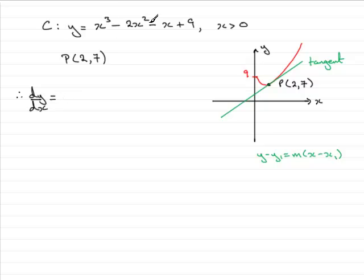So in the usual way, differentiating the first term, we would get 3x². For the next term, minus 4x. For the minus x, we would have minus 1. And for the constant 9, that just goes to 0. So this gives us the gradient at any point on the curve.